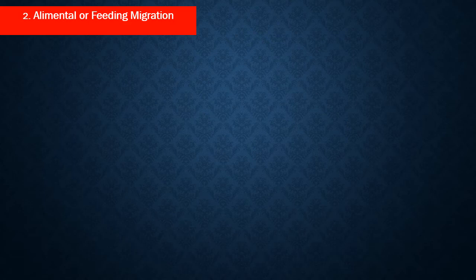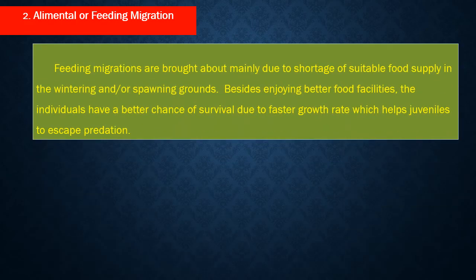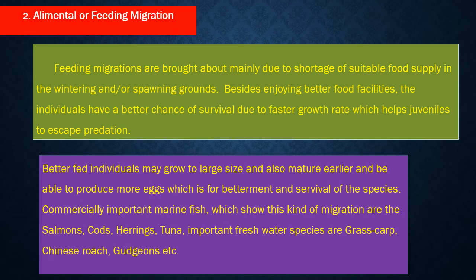Feeding migration is brought about mainly due to shortage of suitable food supply in the wintering or spawning grounds. Besides enjoying better food facilities, individuals have a better chance of survival due to faster growth rate, which helps juveniles to escape predation. Better-fed individuals may grow to large size and mature earlier, able to produce more eggs, which is for the betterment and survival of the species. Commercially important marine fish showing this kind of migration include salmon, cod, herrings, and tuna. Important freshwater species include grass carp, Chinese carp, and sturgeons.